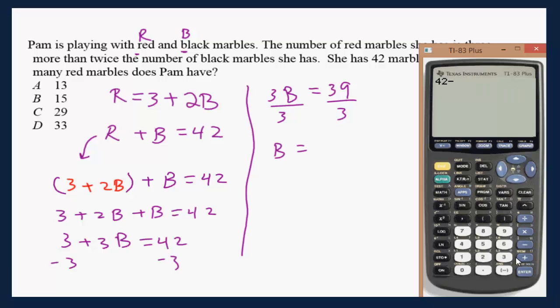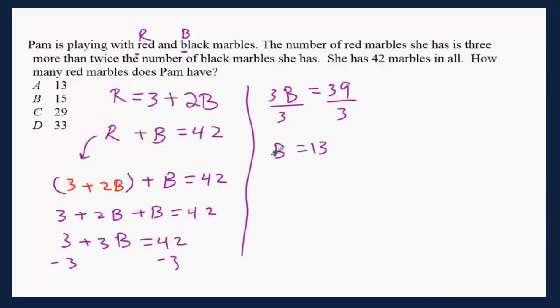First of all, 42 minus 3 is 39 divided by 3 equals 13. I also check with the calculator. This is the black marble. You're looking for the red marble, so therefore the red marble is...